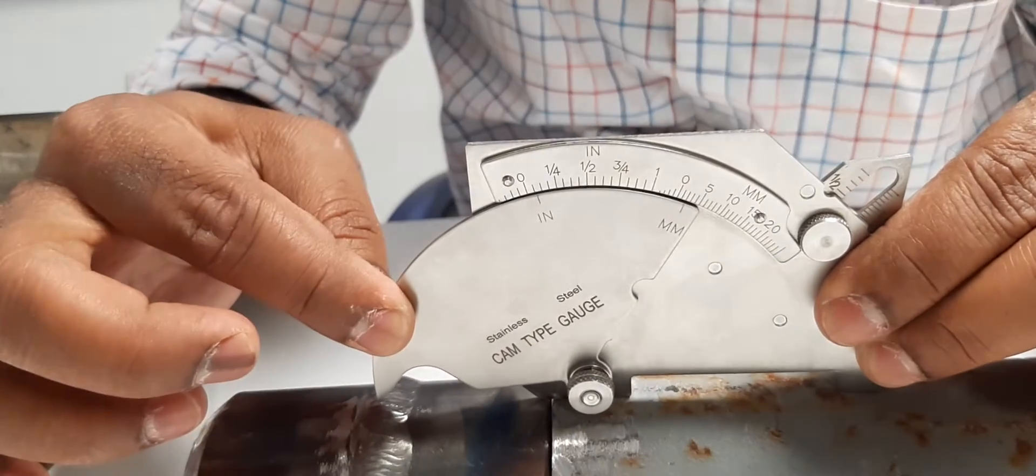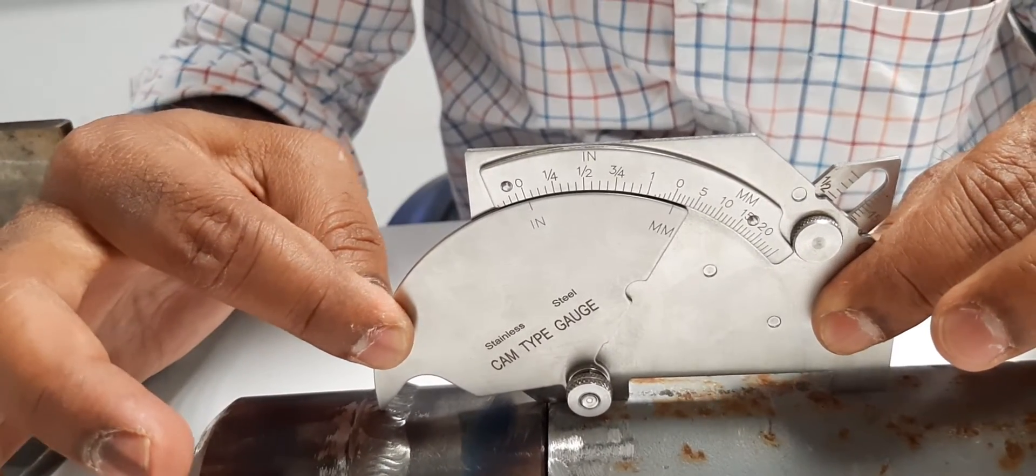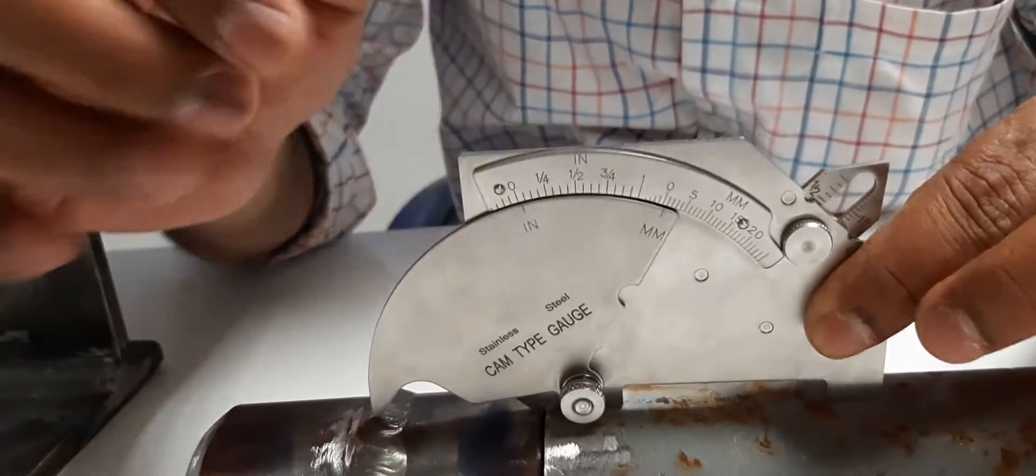Fourth one is excess weld metal height. We can fix the center of the welded area, you can see the reading.